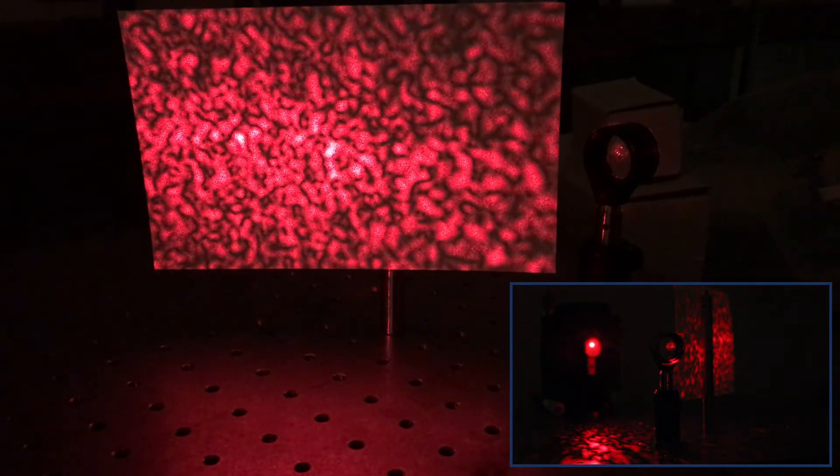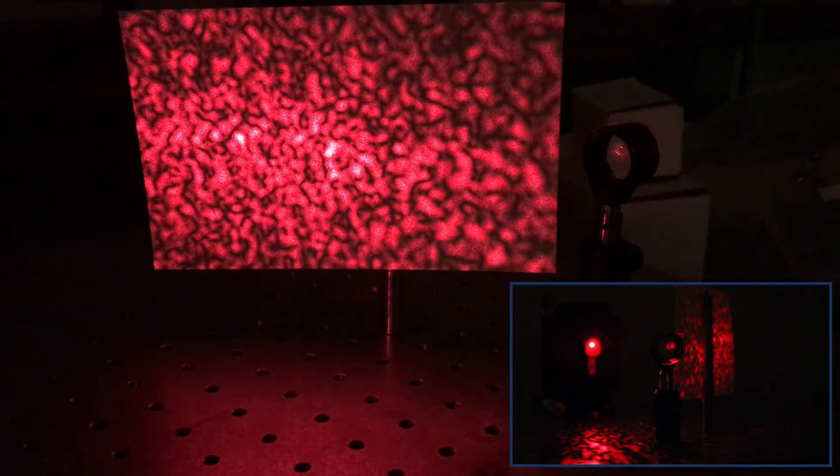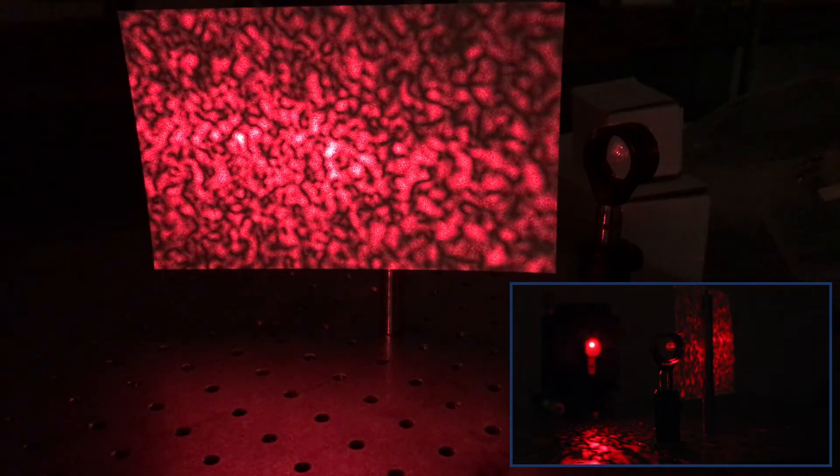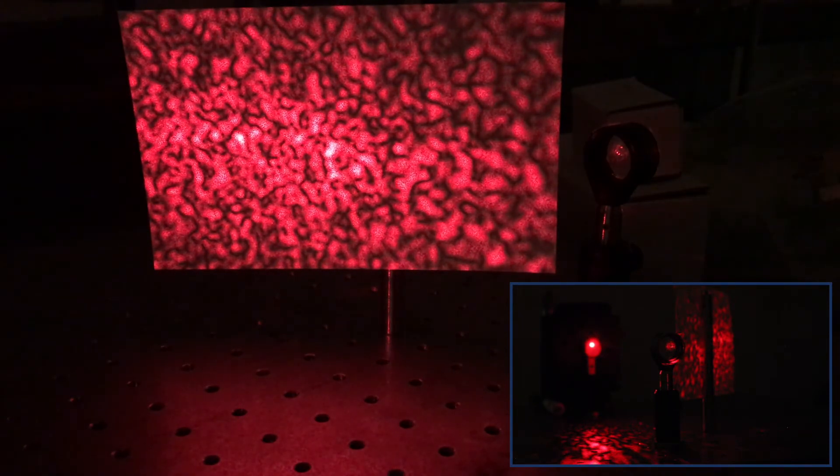It's the Fourier transform of the top hat function that's doing the job. And actually in the two-slit experiment, it's the same thing. In the Fraunhofer limit, it's the Fourier transform of the two slits that you have that makes the diffraction pattern.